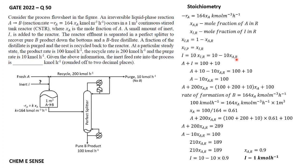Quick recap: this is a stoichiometric problem with three components. We first balanced the inert I, then balanced A through the reactor, then applied the overall rate of reaction equation. Using these four pieces of information and rearranging the algebraic equations, we solved the problem to find the inert flow rate is 1 kmol per hour. Thank you, bye.